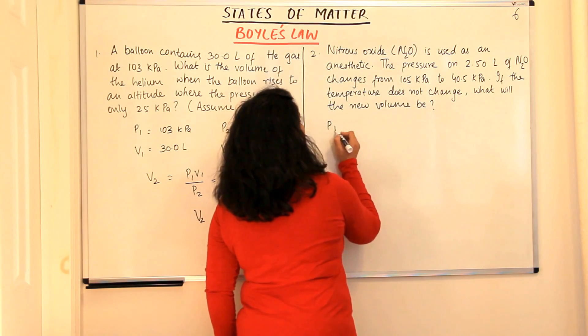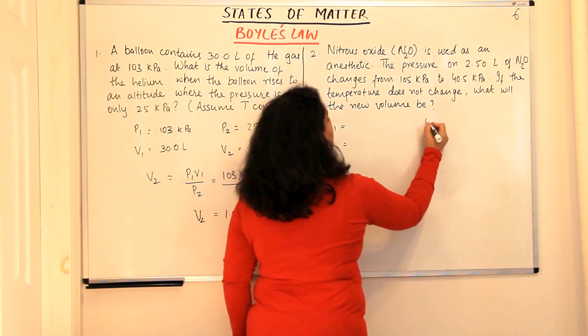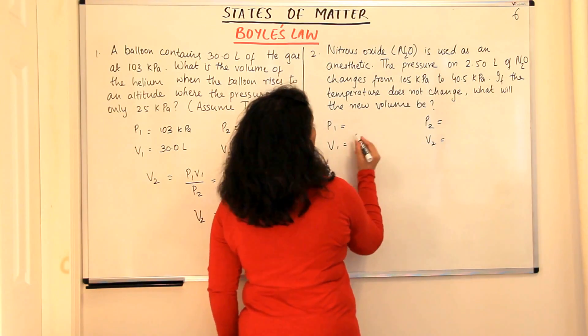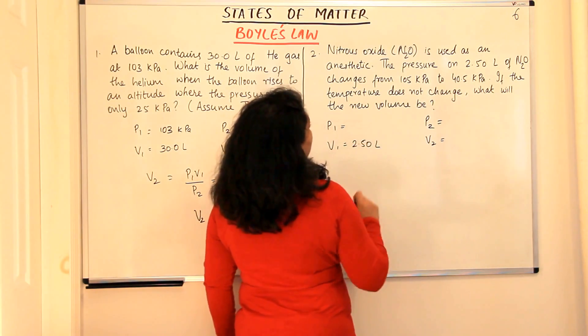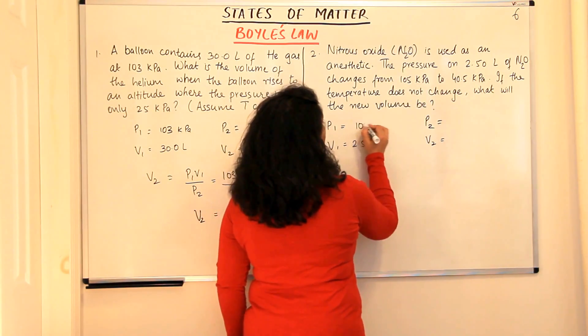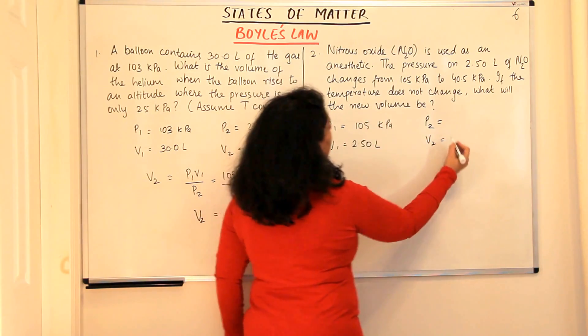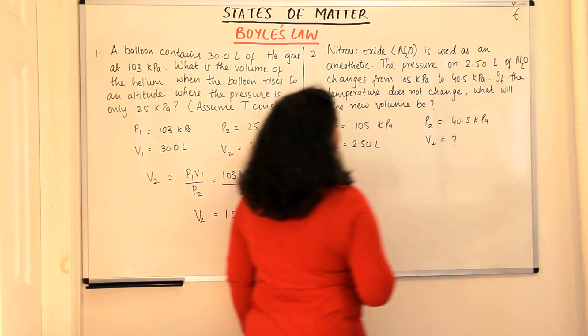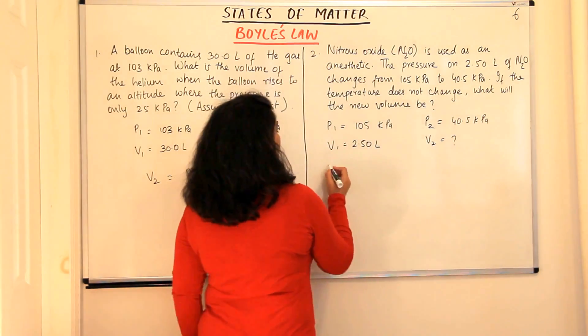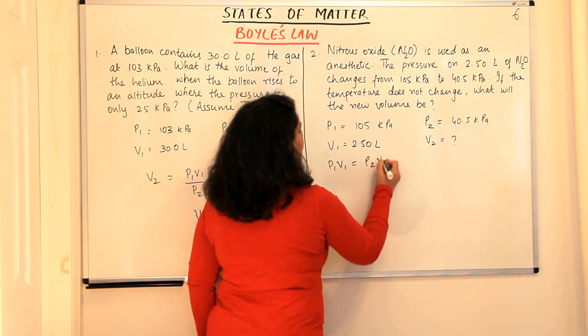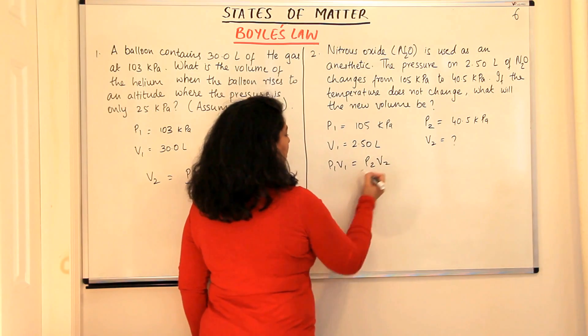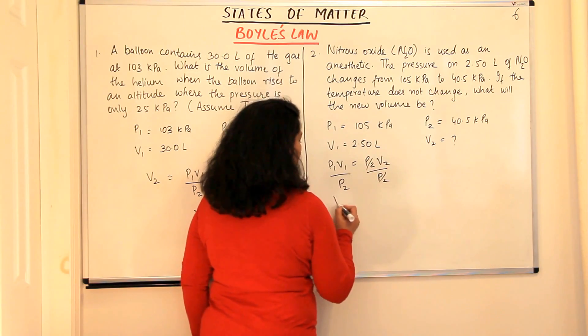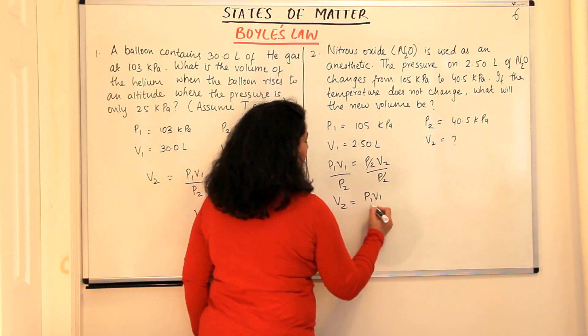Again we look for what are the four things we require? P1, V1, P2 and V2. So what is pressure 1? You have 2.50 litres of nitrous oxide at 105 kilopascal pressure and it is reducing to 40.5 kilopascals of pressure and V2 is to be found out. P1V1 is equal to P2V2 and we are looking for V2. Therefore, we divide both sides by P2. So you get V2 is equal to P1V1 upon P2.